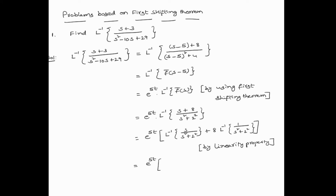The inverse Laplace transform of S by (S² + 2²) is cos 2t, plus 8 times the inverse Laplace transform of 1 by (S² + 2²), which is (1/2) sin 2t.